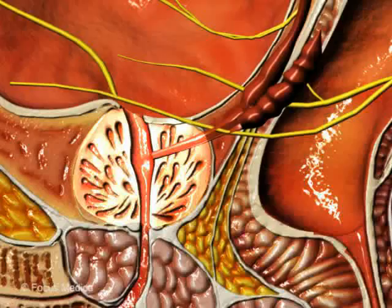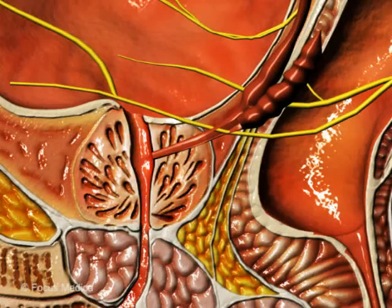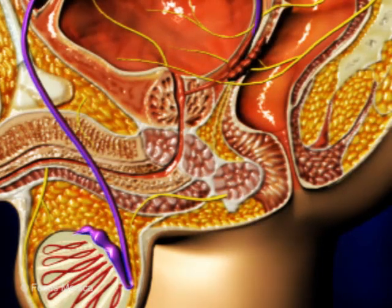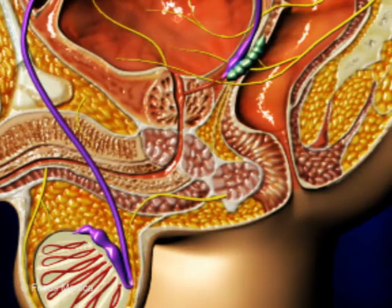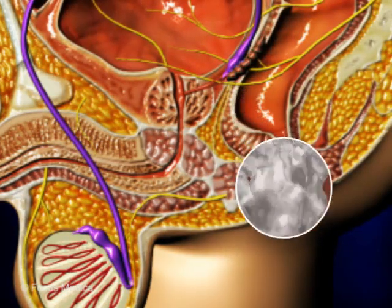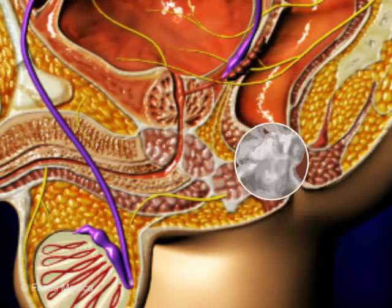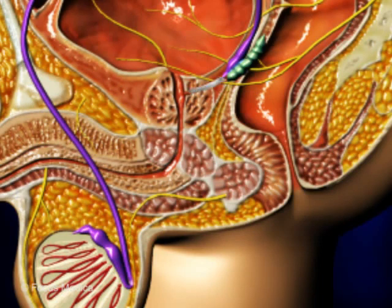The main function of the prostate gland is to secrete a fluid, which nourishes and transports sperms as they move through the urethra during ejaculation.